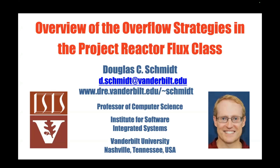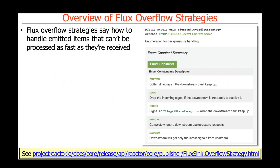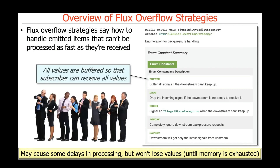We're now going to turn our attention to the overflow strategies that the Project Reactor Flux class implements. There are five of them, which we outlined in the previous part of the lesson. Now we're going to look at them in detail. These overflow strategies are used by subscribers to indicate how they want the Project Reactor framework to handle items that it emits that can't be processed as fast as they are being received. So let's talk about all five of these models.